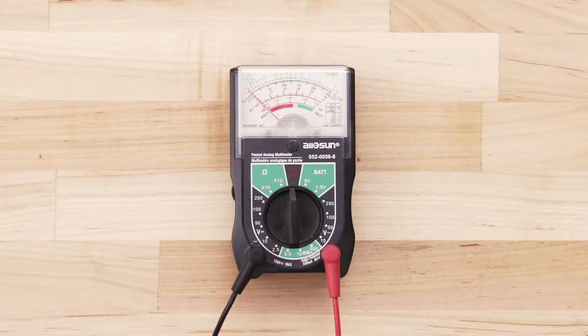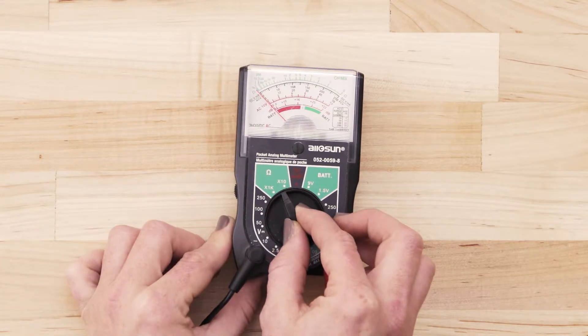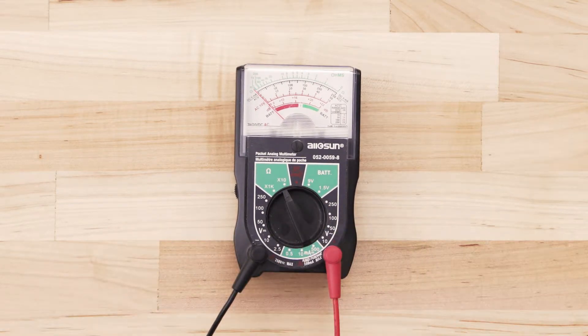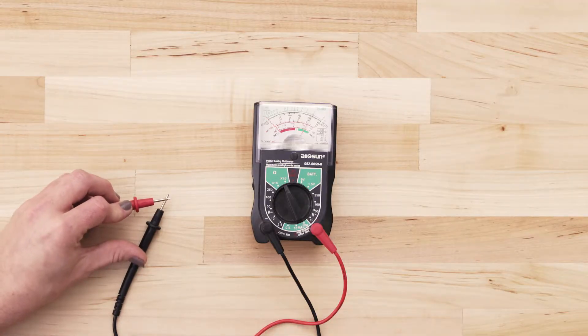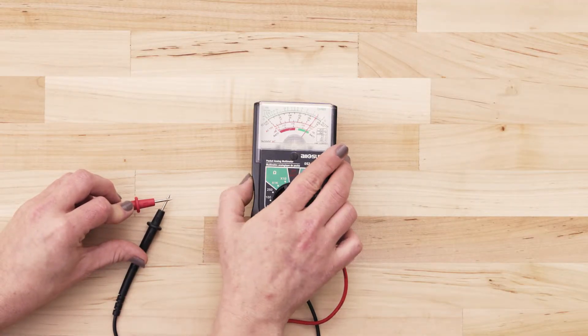If you use an analog multimeter, set the multimeter to the lowest ohms of resistance. Next, touch the probes together and adjust the needle until it's calibrated at zero.